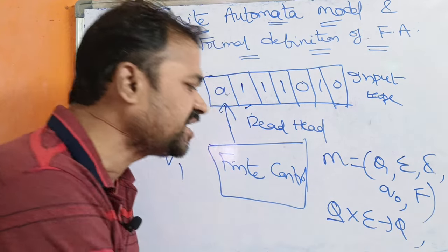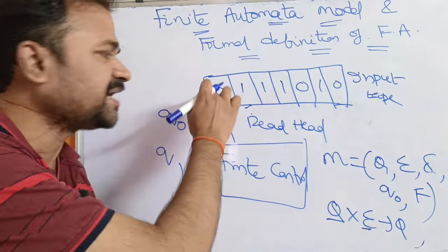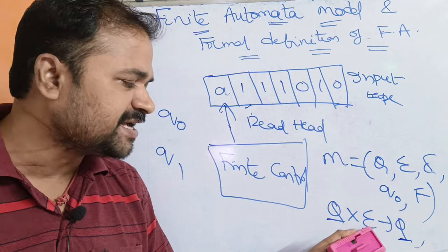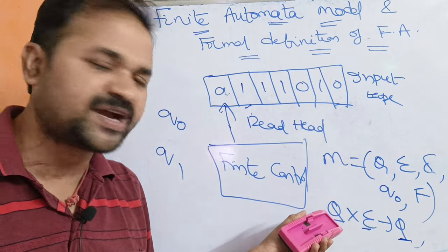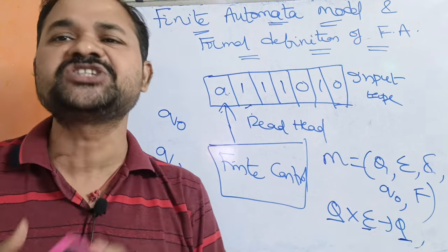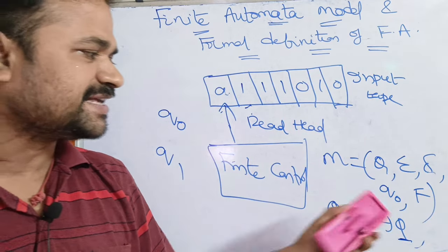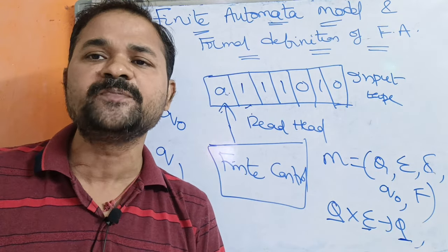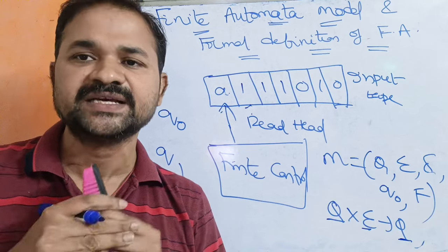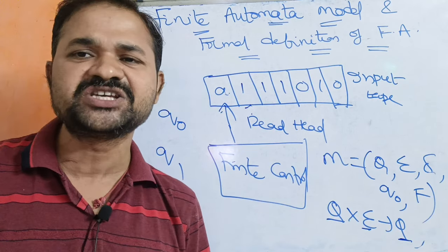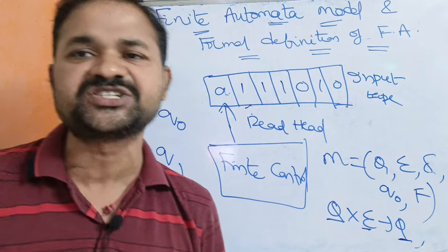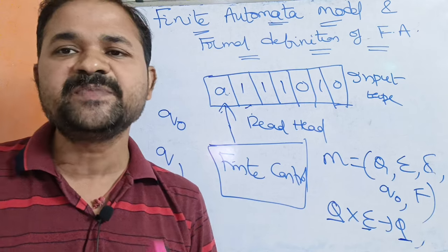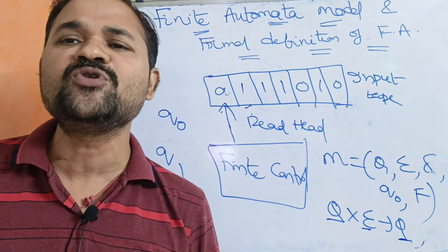In the mapping Q cross sigma to Q, this Q is the current state, sigma is the input symbol, and the resulting Q is the next state. On applying an input symbol to the current state, it produces the next state — that is delta, the transition function. Q0 means the initial state; any transition diagram mainly contains only one initial state. F means the set of final states, so we may have multiple final states.